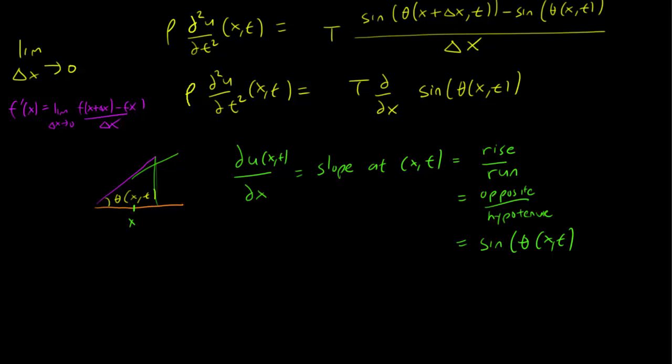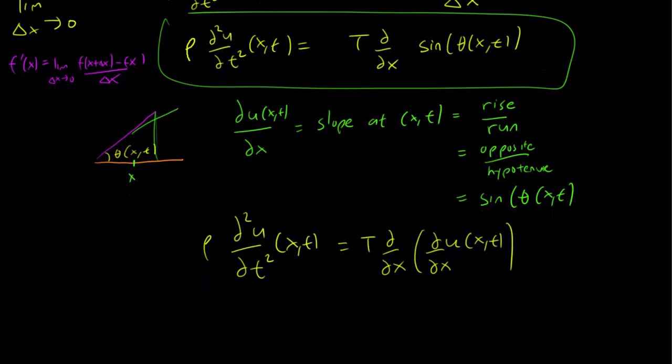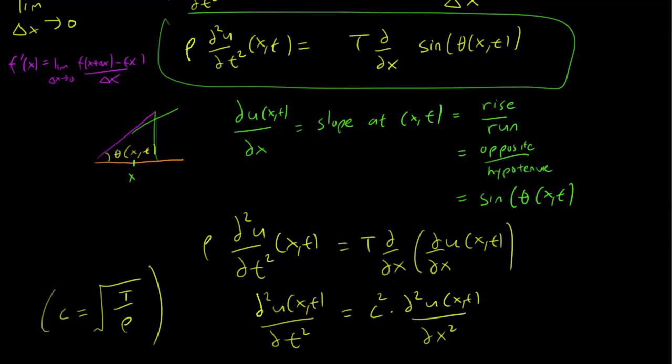Therefore, we can replace the sin term in this equation by the derivative with respect to x. And taking the derivative of the derivative is of course the same as the second derivative. So we can simplify things a bit further, and we get the vibrating string equation with a constant c squared, where c is the square root of T over rho.